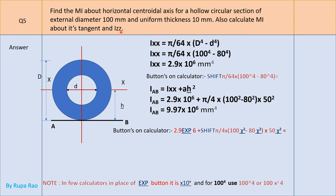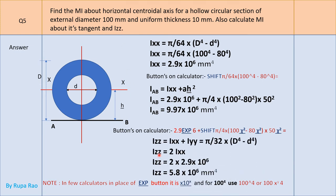For Izz, use the perpendicular axis theorem: Izz = Ixx + Iyy. Since for a circle Ixx = Iyy, Izz = 2 × Ixx = 2 × 2.9 × 10⁶ = 5.8 × 10⁶ mm⁴. Alternatively, use Izz = π/32 × (D⁴ − d⁴), which gives the same answer. Knowing Izz = 2×Ixx is the quickest approach in an exam.